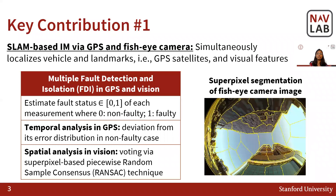Firstly, we estimate the fault status of each measurement as a value between 0 and 1, whereas 0 indicates non-faulty and 1 is faulty. Specifically, we evaluate the GPS fault status based on the measurement deviation from its error distribution in the non-faulty case. To estimate the vision fault status, we segment the image into superpixels as seen in the figure and perform spatial voting via piecewise Landsat formulation.